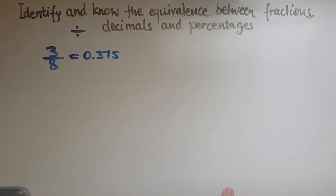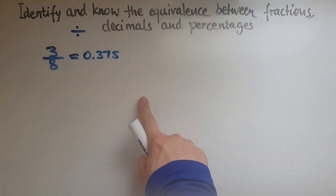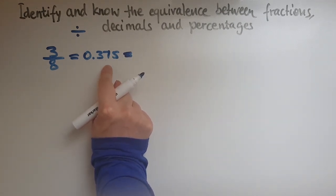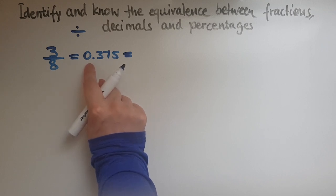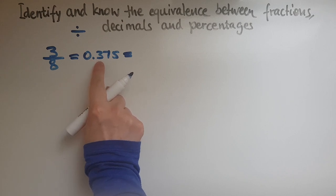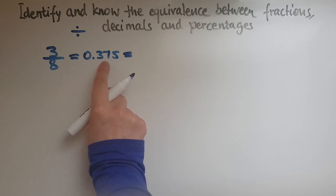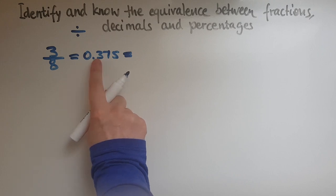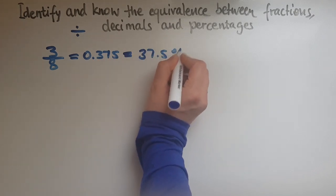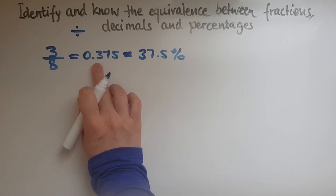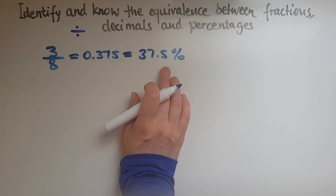So I've converted three eighths to the decimal 0.375 simply by dividing three by eight. Now if I want it as a percentage, I'll relate this to money. If I put a pound sign in front, I can see that's 37 pence and half a penny — 37.5 pence. Since pence is out of a hundred which makes a pound, this is the same as 37.5 percent. Alternatively, you can multiply the decimal by 100 to get the percentage.